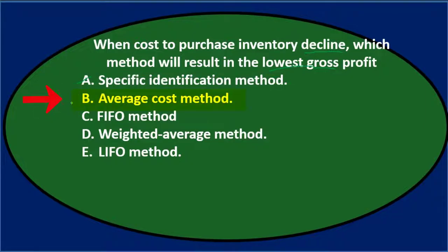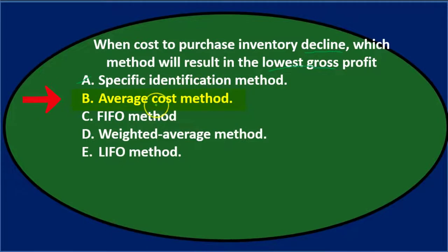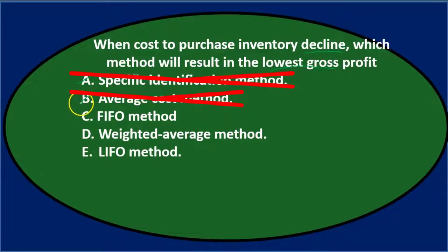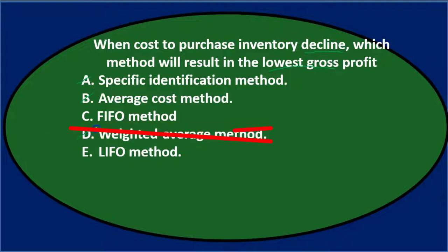Option B, average cost method — the average is not usually an extreme. We're looking for the lowest gross profit, meaning something on the extreme, and the average would be somewhere in the middle, so probably not B. FIFO could be one of the more extreme methods. Option D, weighted average method, is similar to the average cost method. Since it's also an average and we can't have two answers of the same type, I'm going to eliminate D.